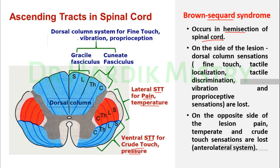In hemisection of the spinal cord, on the side of the lesion, dorsal column sensations — including fine touch, tactile localization, tactile discrimination, vibration, and proprioception — are lost. On the opposite side of the lesion, pain, temperature, and crude touch sensations are lost, because of cutting of the anterolateral system.